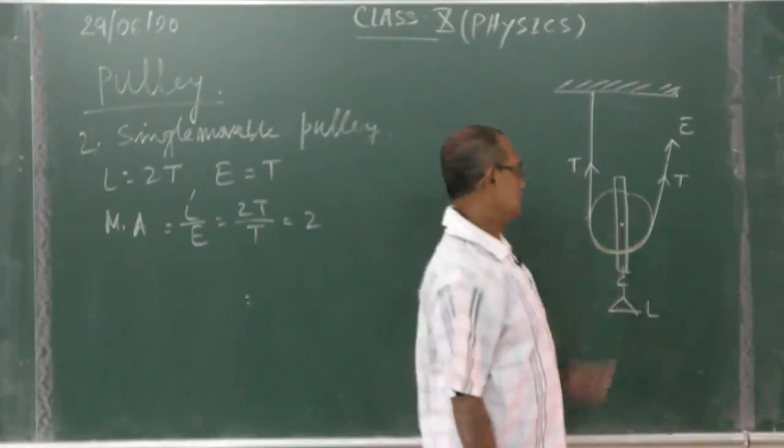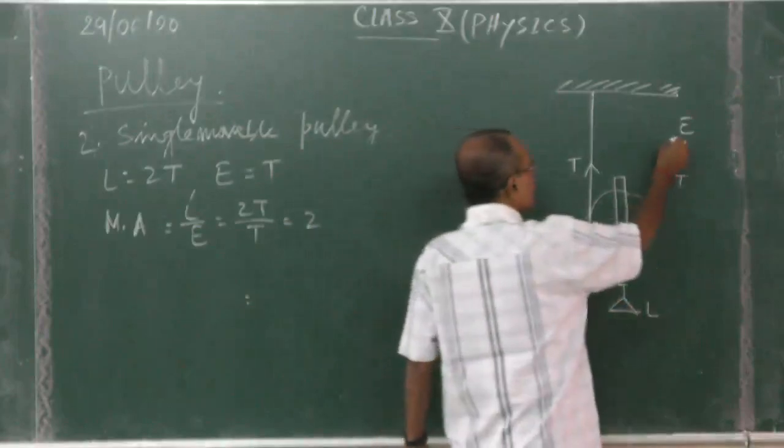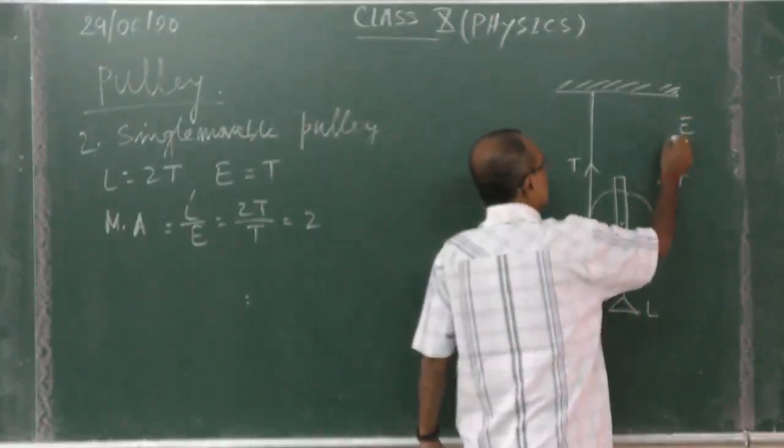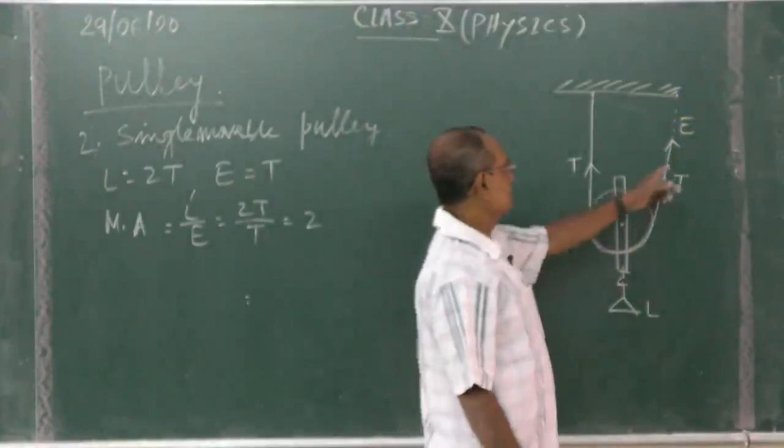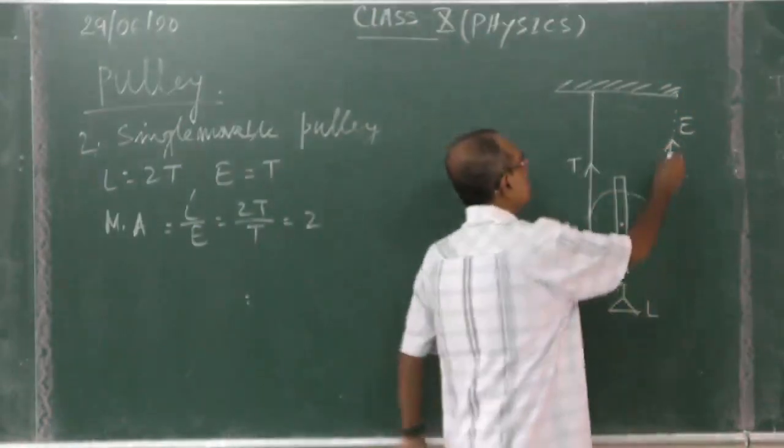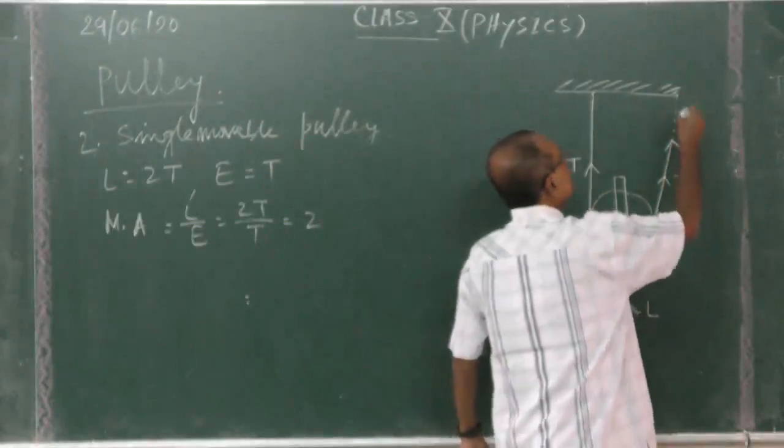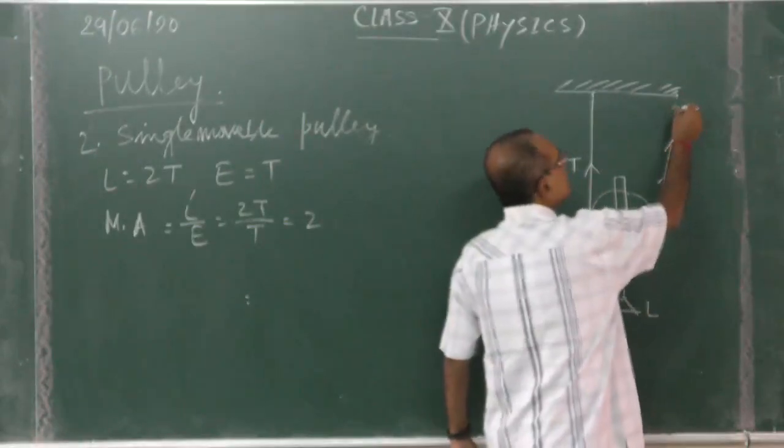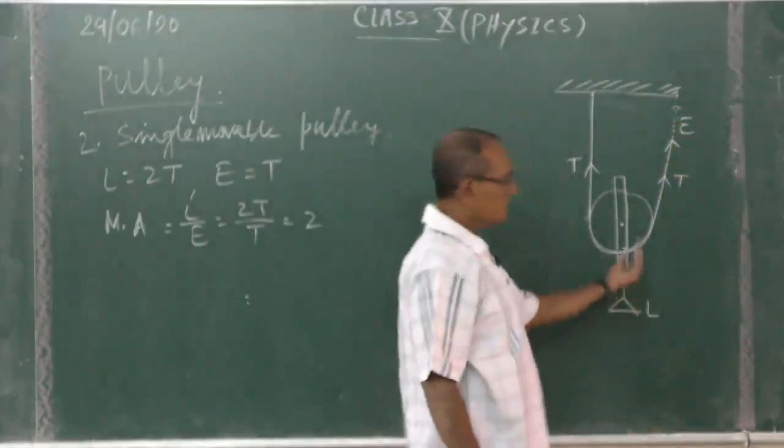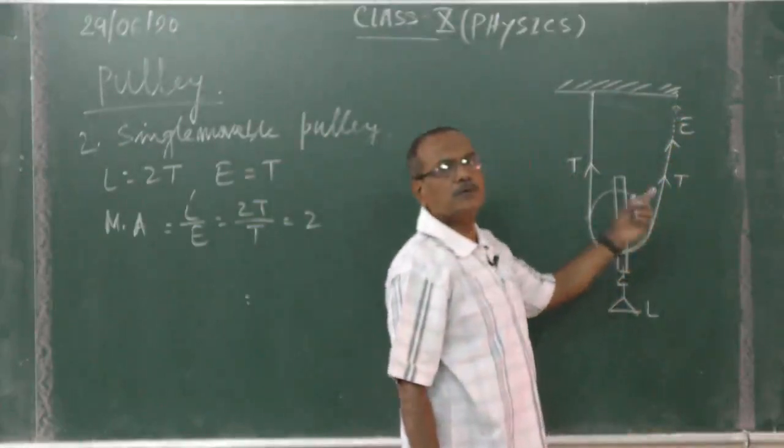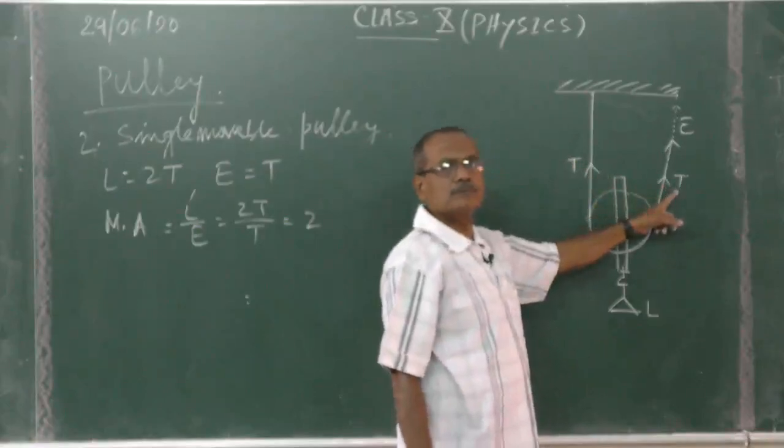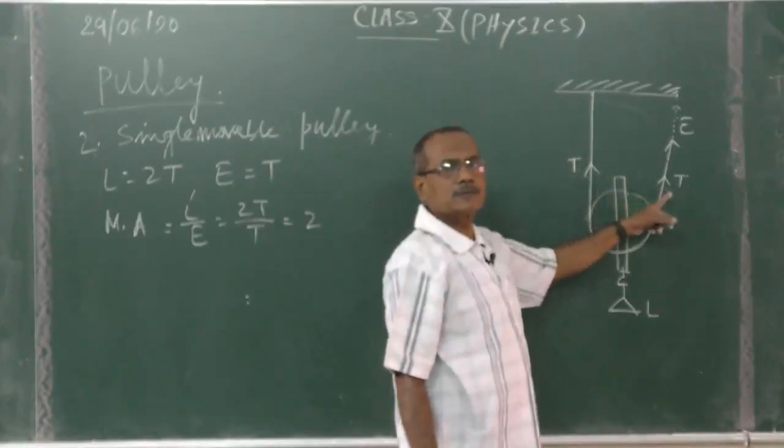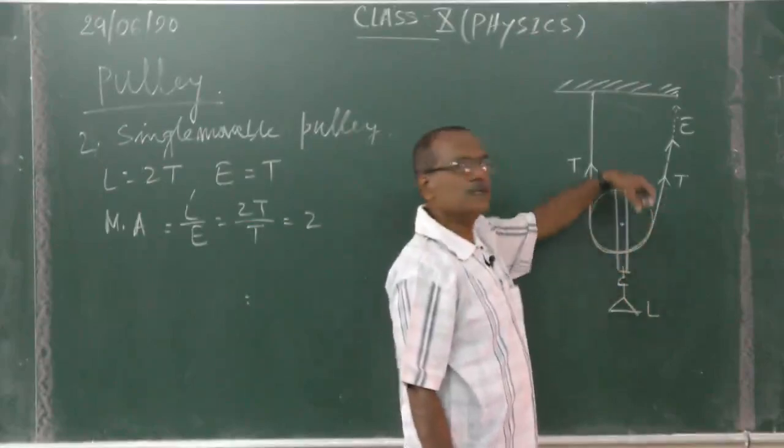But when we will pull here what happened, 2 meter of effort, 2 meter when effort is displaced or rope we are pulling, so then what happened, the load will be lifted only 1 meter, 1 meter from this side, 1 meter from this segment. The load will be lifted.